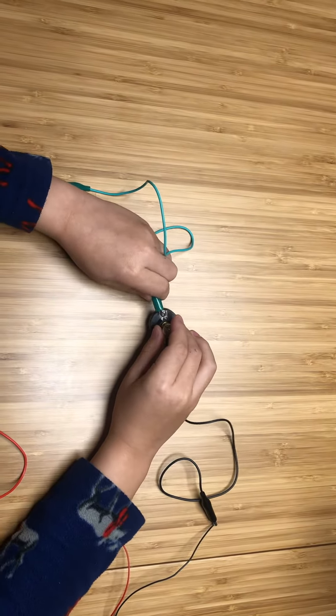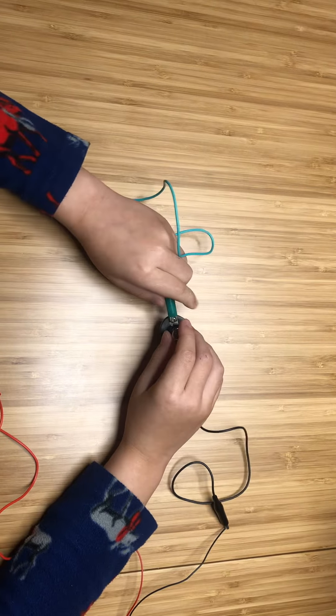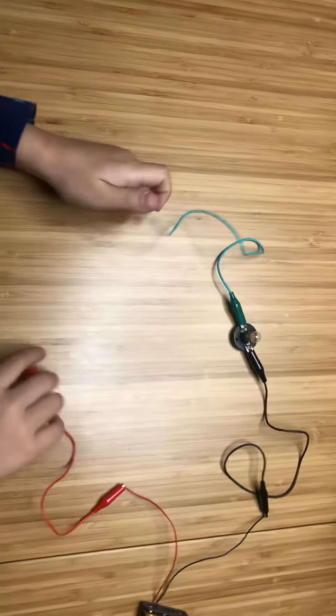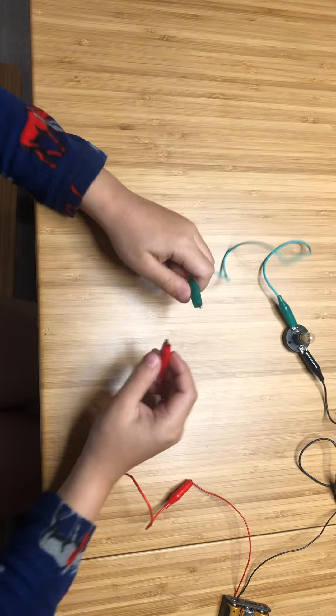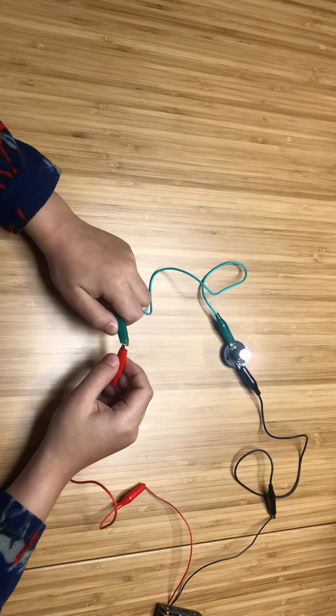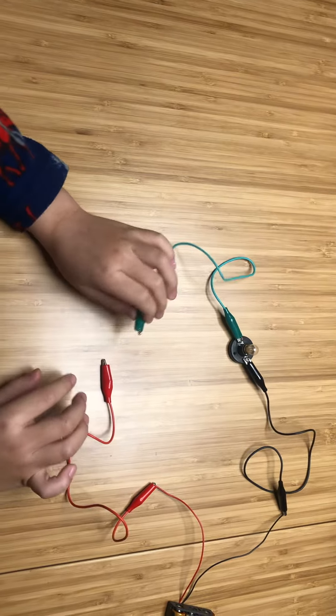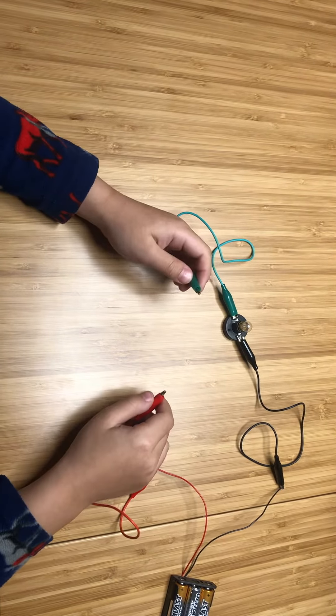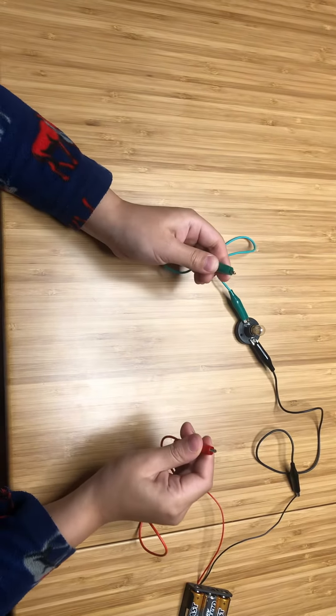Right now, you can see if you just touch these together it'll make a light. So for the pencil resistor project, you need to take the pencil and the black part and clip it.